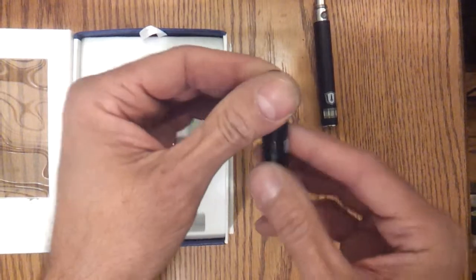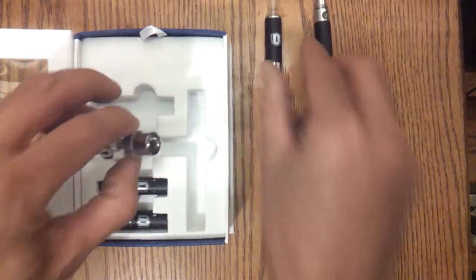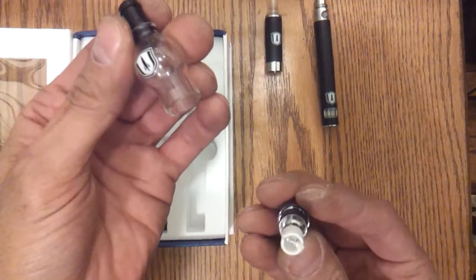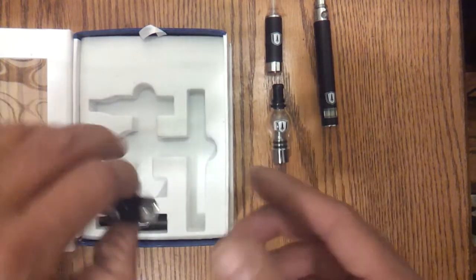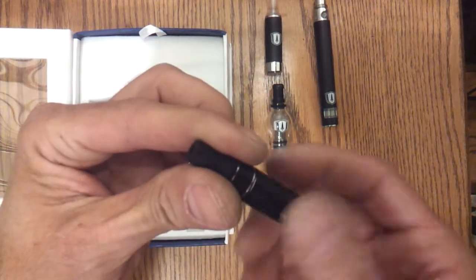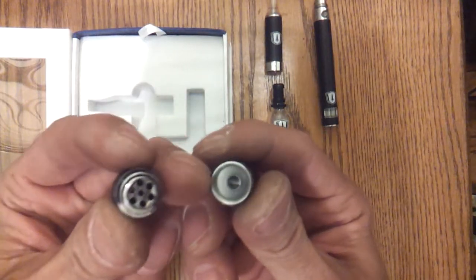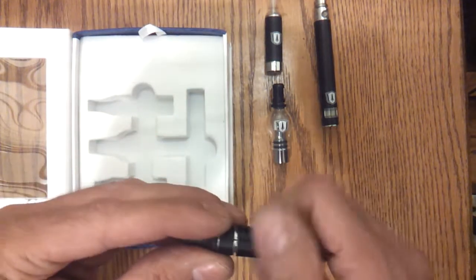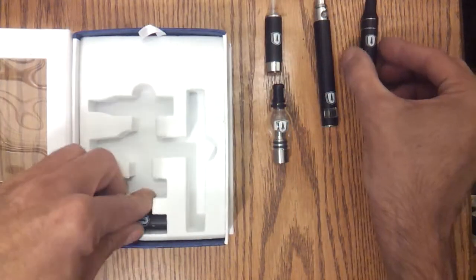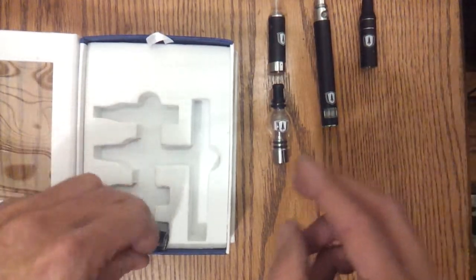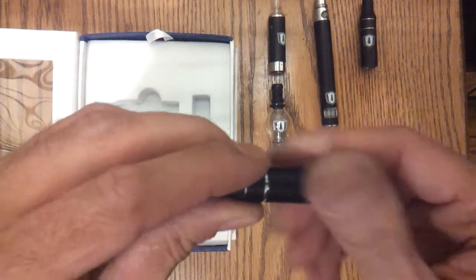You get an e-juice cartridge, a globe for waxes, a pen attachment for waxes, and a dry herb attachment.